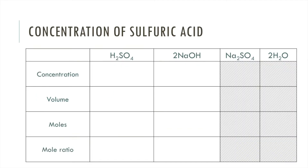Now we're going to work out the concentration of the sulfuric acid — this is a higher tier requirement. I like to do it by drawing a table with the reaction equation across the top. I've included the reactants and products to ensure the equation is balanced. We have one mole of sulfuric acid reacting with two moles of sodium hydroxide to form one mole of sodium sulfate and two moles of water. Down the left-hand side we have concentration, volume, moles, and mole ratio. We'll work through these in a specific order, starting with what we know.